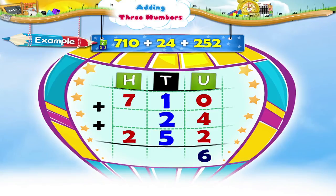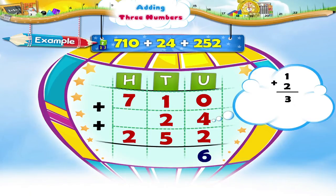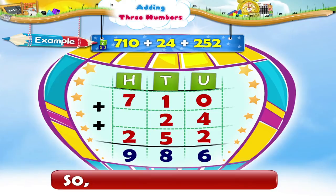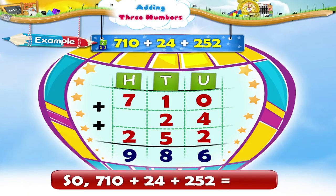Then you add the digits in the tens place: one plus two equals three, and three plus five equals eight. Eight is written in the tens place. Now we add seven and two in the hundreds place — it equals nine. So seven hundred and ten plus twenty-four plus two hundred and fifty-two equals nine hundred and eighty-six.